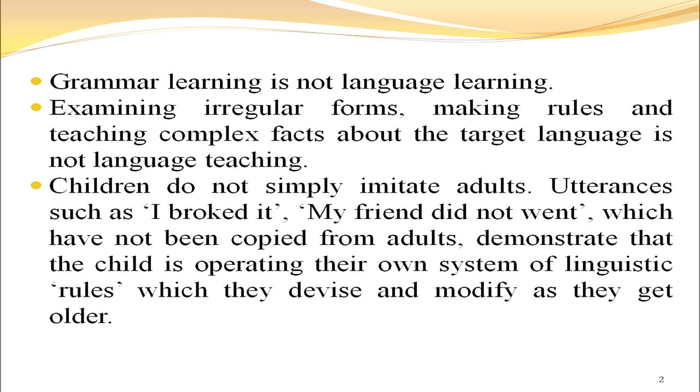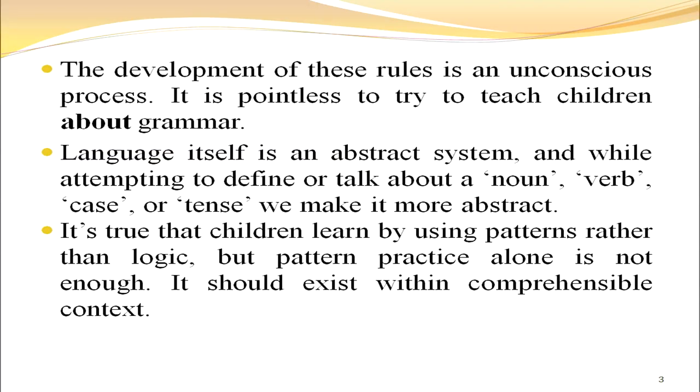Sentences such as 'I broke it' and 'My friend did not went', which have not been copied from adults, demonstrate that the child is operating their own system of linguistic rules, which they devise and modify as they get older. In English, the past tense is marked by '-ed' in writing, or the /d/ or /t/ sound in speech — so 'broke', 'looked', etc. Children naturally say 'My friend did not went' because they know the past tense requires a past form. As they get older, they correct this mistake.